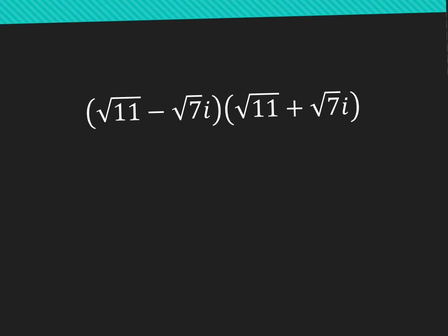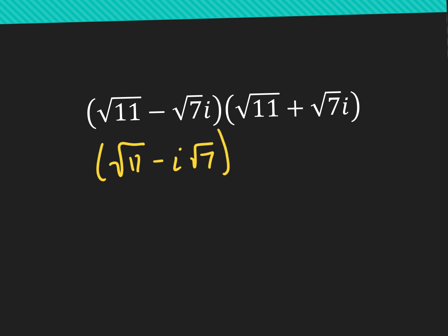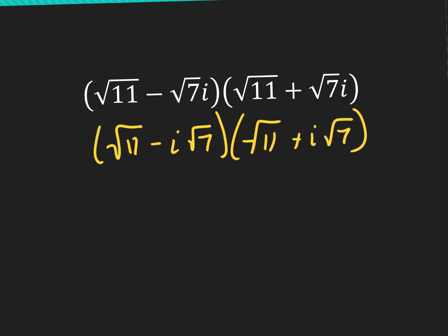All right, my second one. I'm going to rewrite this as the square root of 11 minus i square root 7 times the square root of 11 plus i square root 7. I just don't like the i in the back of the square root — sometimes it sneaks up under and it's hard to see. So we're just going to keep it like that. Let's go ahead and FOIL.